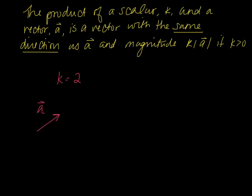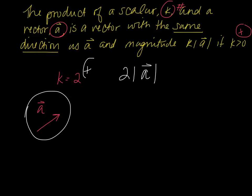The product of a scalar k and a vector a is a vector with the same direction as a and the magnitude k times vector a if k is greater than 0, meaning k is positive. So k is just a number, a is just a vector. You're going to take vector a here and multiply it by 2. So you're just saying 2 times the magnitude of vector a. Because 2 is positive, it's going to go in the same direction as a. So I'm just going to copy a in the same direction twice. This is a, this is a. Together they make one vector that is 2a.